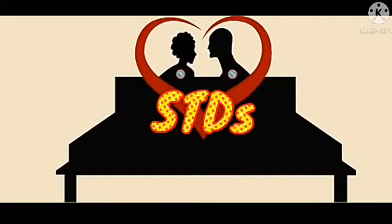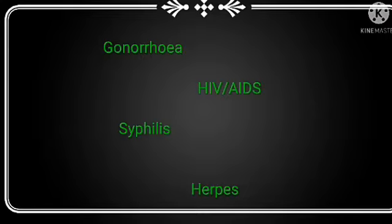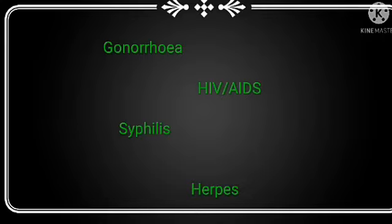STDs, which are sexually transmitted diseases, are also a platform through which diseases are spread from one person to another. During sexual intercourse, diseases are spread from one person to another. Examples include gonorrhea, HIV/AIDS, syphilis, and herpes. These diseases are deadly and very dangerous to human health. Therefore, it is very important to take care and avoid sexually transmitted diseases by being faithful to one partner.